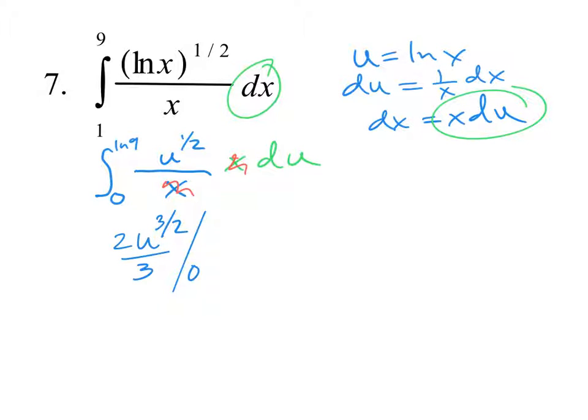We're going from 0 to ln of 9. Plugging in 0 gives 0. So we have 2/3 times (ln 9)^(3/2) minus 2/3 times 0^(3/2). But the second term is just 0, so it doesn't matter.